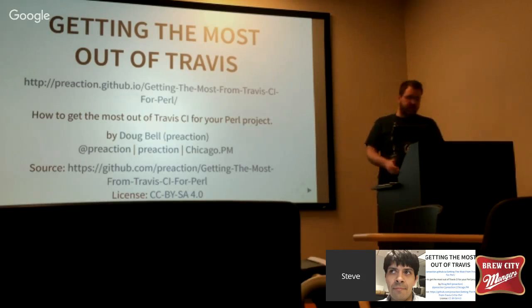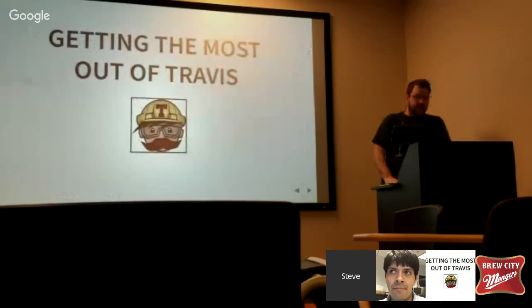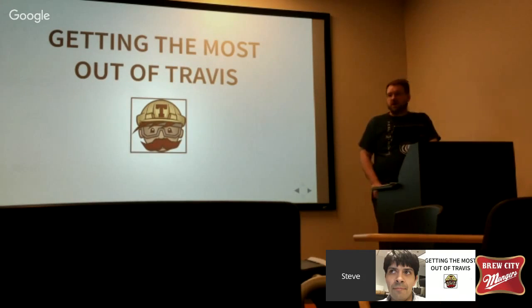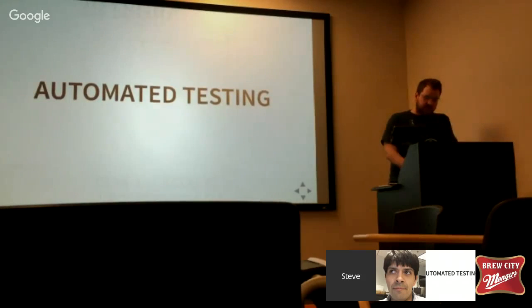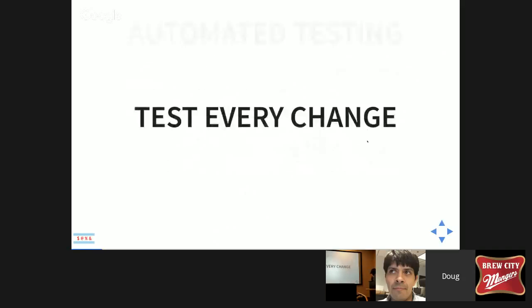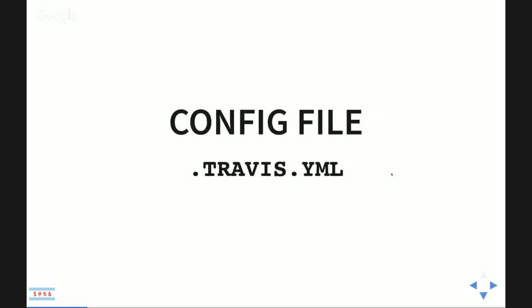We're going to start out with getting the most out of Travis CI. Has anybody here heard of Travis? Okay, so everybody except the people who don't want to raise their hand has at least heard of Travis. Travis CI is Continuous Integration, which is automated testing. It basically lets you test every change for your GitHub project. And it's totally free, so if you're not using it already, you might want to start.